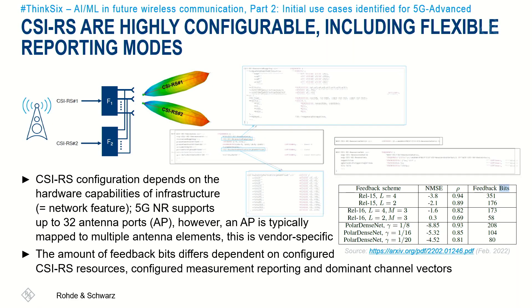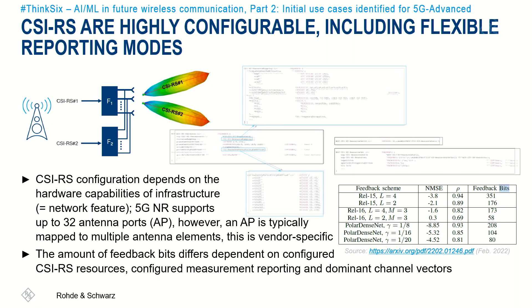Of course, this is only a very high-level description. There are many details, as the CSIRS can be very flexibly configured, as you can tell from the ASN.1 information elements shown here — an eye chart not meant to be read, but rather to illustrate the flexibility of how to configure these signals and allocate the required resources. The underlying configuration depends on a number of factors, including the hardware capabilities of the infrastructure, which are vendor specific.